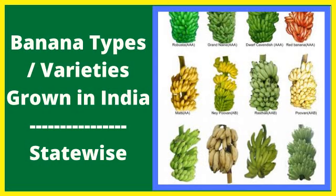Andhra Pradesh, Assam, Bihar, Gujarat, Karnataka, Kerala, Madhya Pradesh, Maharashtra, Orissa and West Bengal are major banana growing states. The highest productivity is 52.18 tons per hectare in Maharashtra, followed by Gujarat at 40 tons per hectare. The lowest productivity is from the northeastern region.